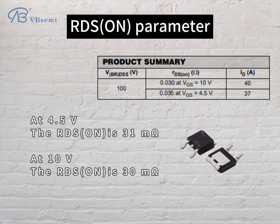RDS(ON) parameter: at 4.5V, the RDS(ON) is 31 milliohms. At 10V, the RDS(ON) is 30 milliohms.